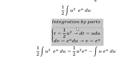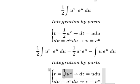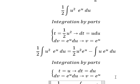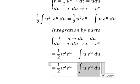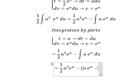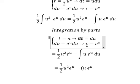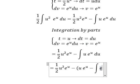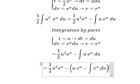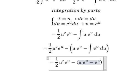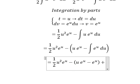Now we use the same technique. We have t multiplied by v, giving u e to the power of u, minus dt multiplied by v, giving the integration of e to the power of u. So the integration of this gives e to the power of u, and then we add the constant c.